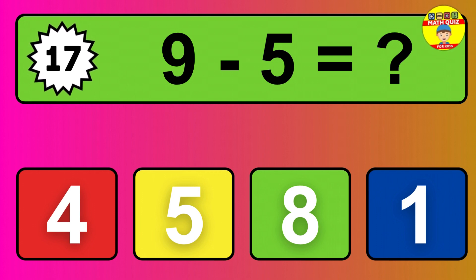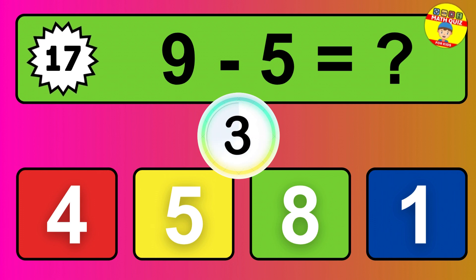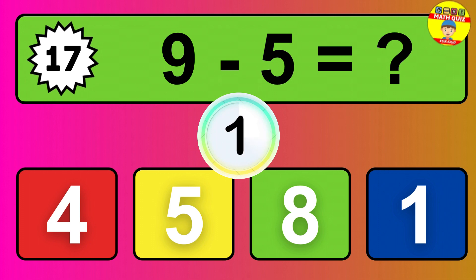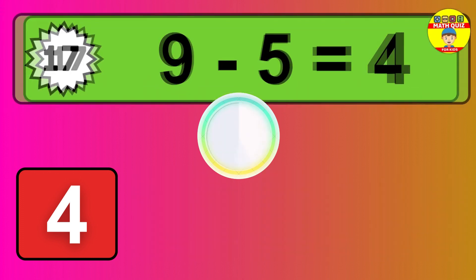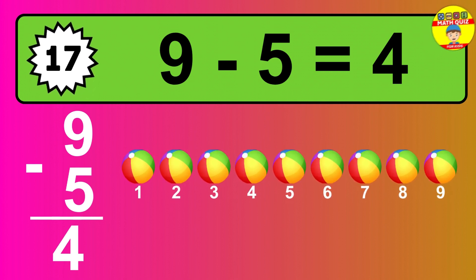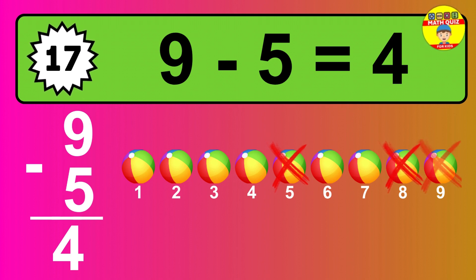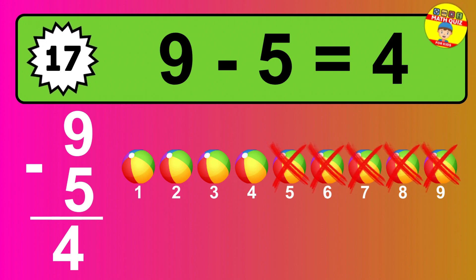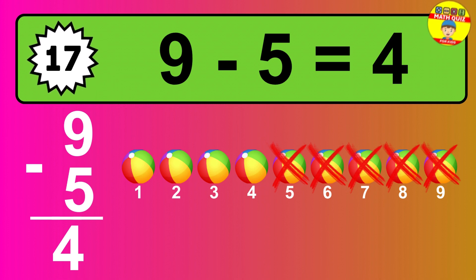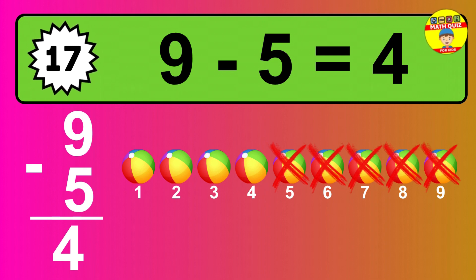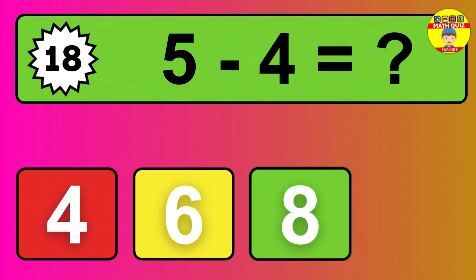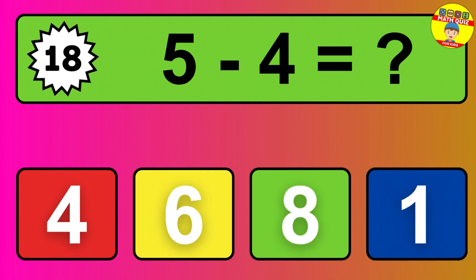Question 17: 9 minus 5 equals what? The answer is 9 minus 5 is 4. Let's count it: 1, 2, 3, 4.